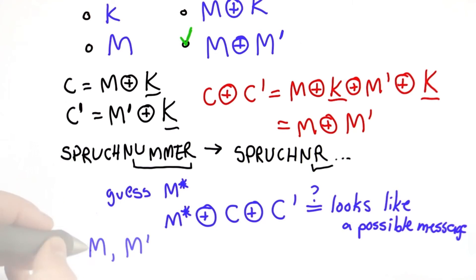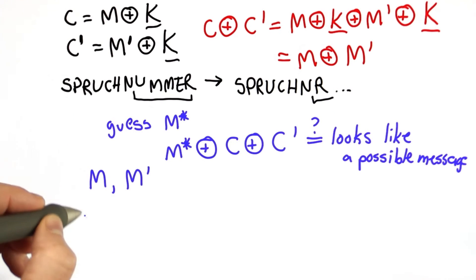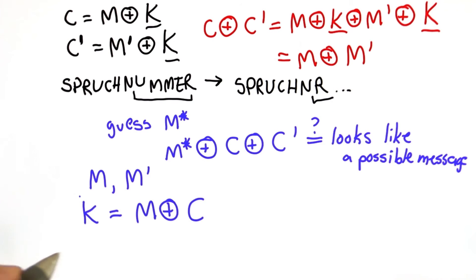Once you get the two messages by this guessing process, then it's easy to find the key. Once you have the two messages through this guessing, you had the ciphertext intercepted. Now you know the key. So learning the messages might be useful. By the time you've done all this work, maybe it's too late for the message to be useful.